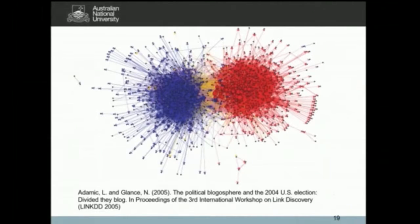To finish up this section on hyperlink networks: this is an image I'm sure all of you will have seen many times. The Divided They Blog network by Lada Adamic and Natalie Glance is kind of the poster child image of computational social science. It shows bloggers active leading up to the 2004 US presidential election, coded as conservative or liberal. There is a very clear clustering phenomenon — interlinkage between the groups exists but is far outweighed by the within-group tendency to link.